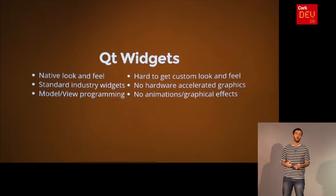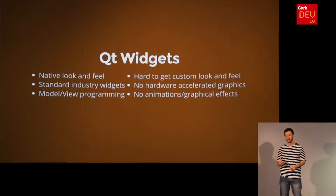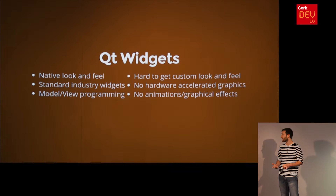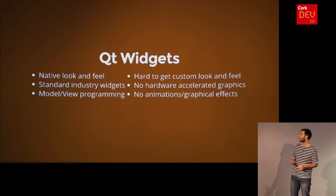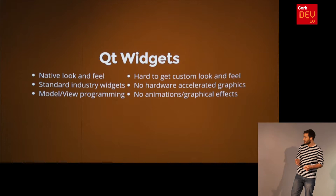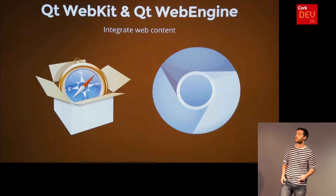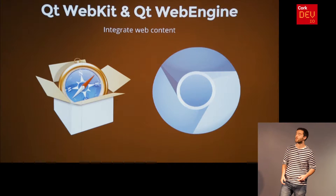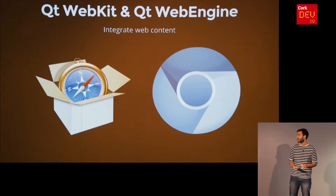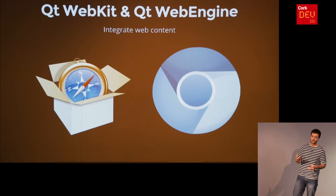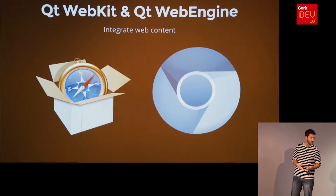Qt Widgets give you a native look and feel on the target platform. If you deploy on Windows or Linux, they will look like native applications on each. You have standard entry widgets and model-view framework APIs that let you be quite productive. However, it's really hard to get a custom look and feel that completely deviates from traditional desktop GUIs, there is no hardware acceleration, and they don't support animations or fancy graphical effects like CSS3. Another approach, especially for web developers, is to use Qt WebKit or Qt WebEngine — modules that let you integrate web content within your application so you can develop using HTML5, JavaScript and CSS, then deploy to many Qt-supported platforms.